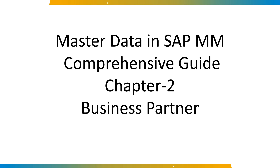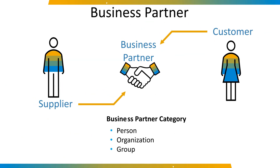Without any further delay, let's get started. The master data of suppliers and customers is managed in SAP S4HANA by using business partner master data. By using this approach, it is possible to centrally maintain the master data for suppliers and customers. In SAP ERP, they were handled separately. Business partner master data can be maintained with the transaction BP or by using the corresponding apps from the SAP Fiori launchpad.